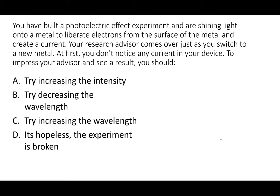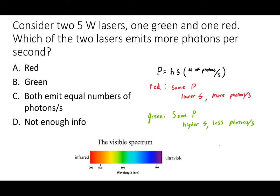For the first concept question: if you set up a photoelectric experiment and see no current at all, you're likely using light at too low a frequency. That means hf is smaller than the work function, giving no current. The fix is to increase the frequency above the threshold frequency — which is equivalent to decreasing the wavelength.